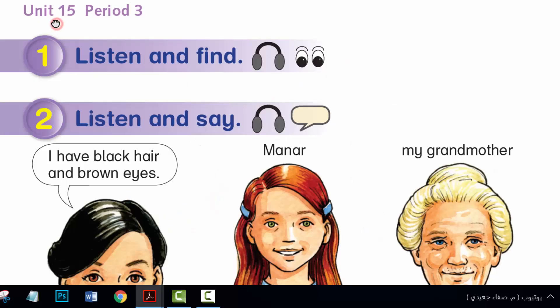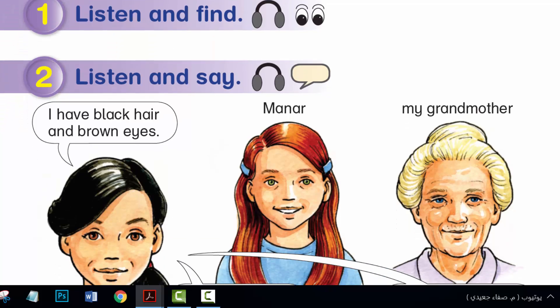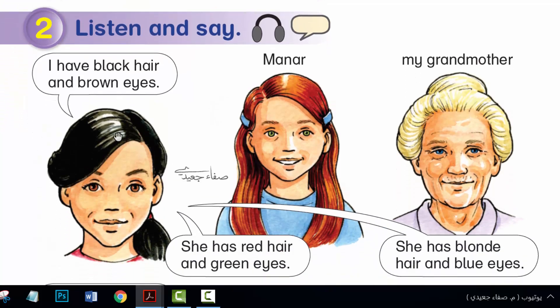Unit 15, Period 3, Activity 1: Listen and Find. Hi, I'm Tala. I have black hair and brown eyes.